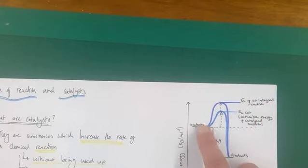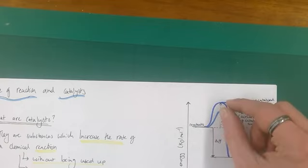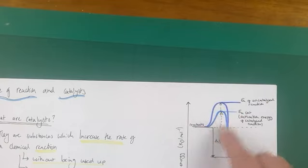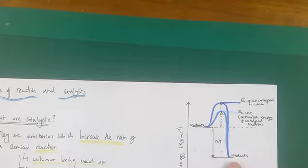So the catalyst is providing an alternative reaction pathway with a lowered activation energy, this much lower. And that's allowing the reaction to proceed and follow this new route at lowered activation energy. And therefore that will cause an increase in the rate of reaction as a result.